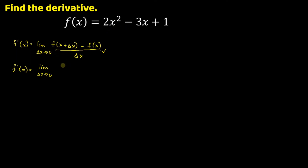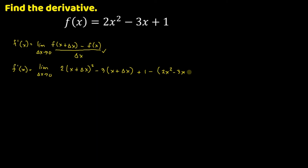So we have 2 times x squared — x will become x plus delta x, squared — minus 3 times x becomes x plus delta x, plus 1. This is the value of f of x plus delta x. Minus the value of the original function, which is 2x squared minus 3x plus 1, all over delta x.